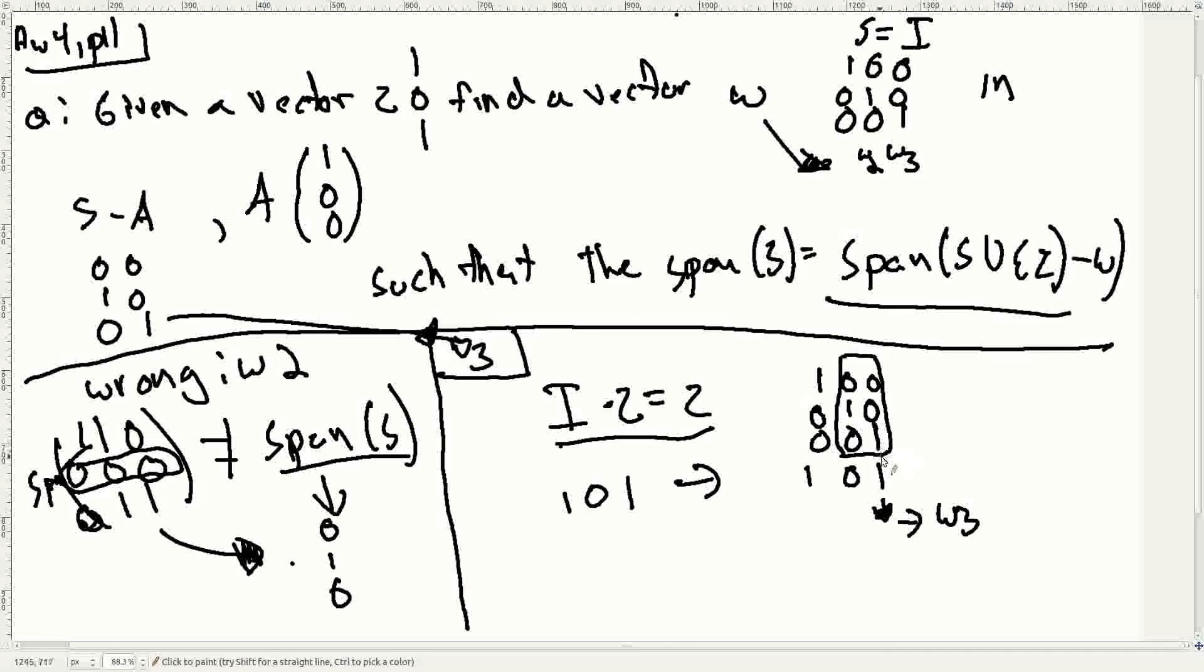Now, why is that the case? It's because if you take away 2 here, you're not going to be able to create this 1. You're not going to create anything in that row and get this 1. But if you take away w3 here and replace it with z, which of course you recall is 1, 0, 1, then you've got something that you can put in that third row. And that's why.